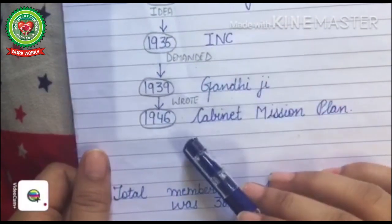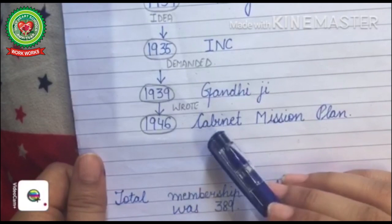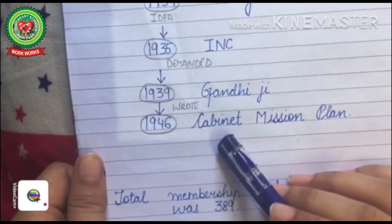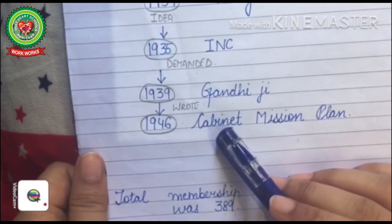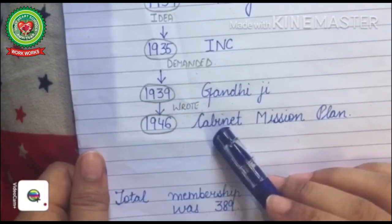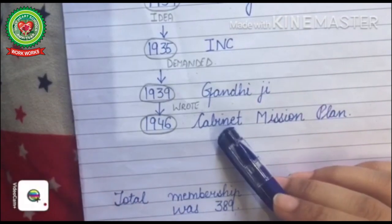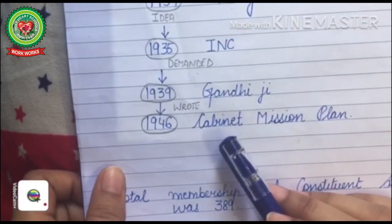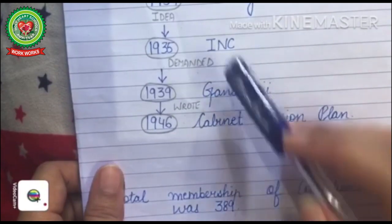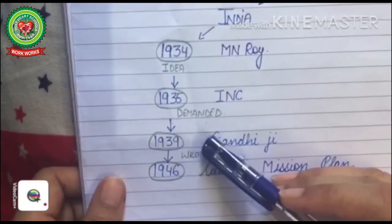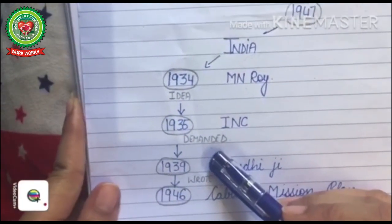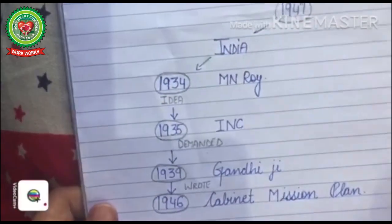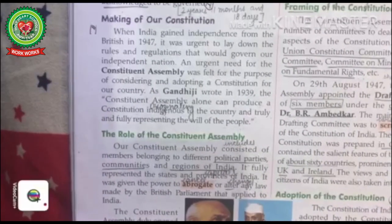Finally in 1946, with the coming of the Cabinet Mission Plan, the Constituent Assembly was constituted. 'Cabinet' means the most important ministers in the government who have regular meetings with the Prime Minister. According to this plan, it contained the proposal regarding the constitutional future of India. Students, you must revise these dates as they are important for competitive exams, civil services exams, and entrance exams in the future.